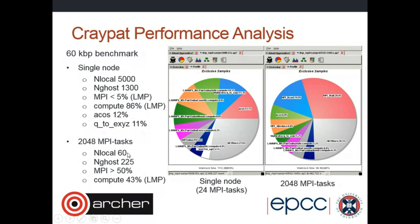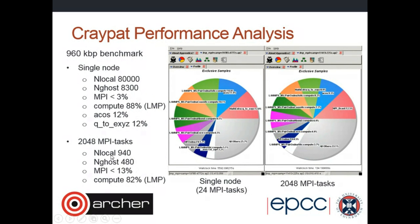On 2,048 MPI tasks, the low-density benchmark becomes dominated by communication: MPI broadcast is about 15 percent, and compute time drops to 43 percent. The reason is clear — there are not enough local atoms per core, and the algorithm is dominated by ghost atom communication. For the high-density benchmark at both single node and 2,014 MPI tasks, behavior is well-behaved: time is split comparably between force computation and communication at higher process counts, with parallel efficiency still in the range of 80 percent.